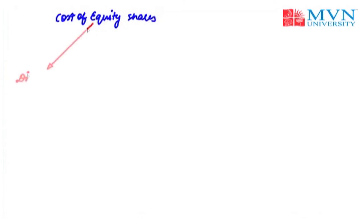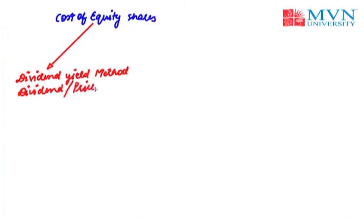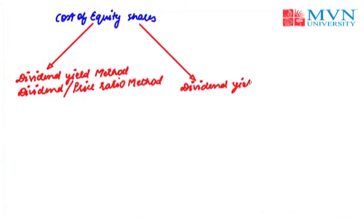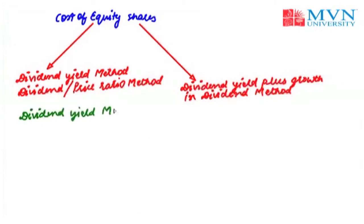The cost of equity shares can be computed by two ways: the first one is the dividend yield method, which we often call the dividend price ratio method, and the second one is the dividend yield plus growth in dividend method. Now let us discuss the first method — the dividend yield method. The basic assumptions underlying this method are that investors give prime importance to dividends and that risk in the firm remains unchanged.